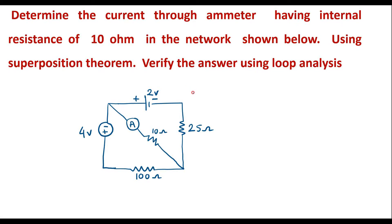Let me consider one numerical on superposition theorem. Determine the current through an emitter having internal resistance of 10 ohm in the network shown below using superposition theorem. Verify the answer using loop analysis. This is the given circuit where we have the emitter which has 10 ohm internal resistance. We are supposed to calculate the current through this emitter using superposition theorem, and the same current should be verified using loop analysis method.